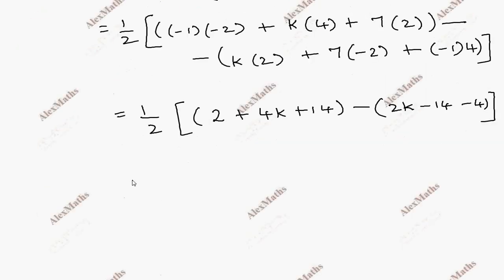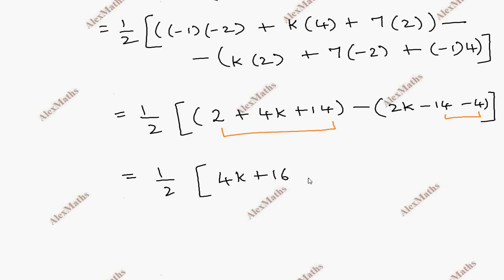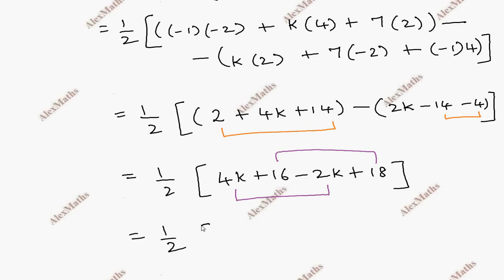Further simplifying, half bracket open: collecting the k terms gives 4k minus 2k which is 2k, and the constants 2 plus 14 minus 14 minus 4 which is minus 2, giving us one-half bracket open 2k plus 34, bracket close.